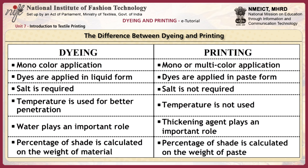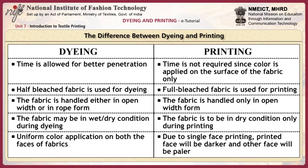In the dyeing process, percentage of shade is calculated on the weight of the material, but in printing, percentage of shade is calculated on the weight of the paste. In dyeing, time is allowed for better penetration, whereas in printing, time is not required since color is applied only on the surface of the fabric.